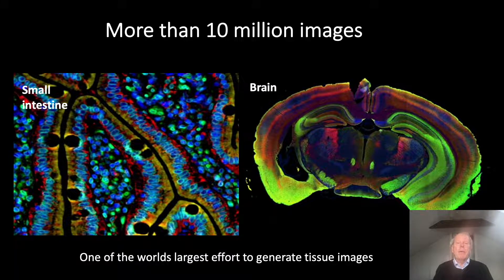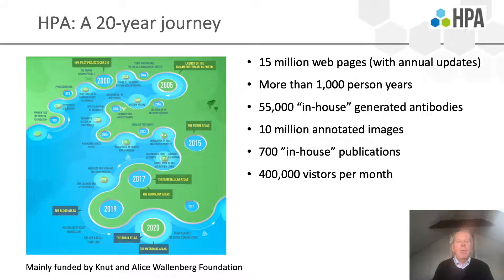We have created more than 10 million images, making this one of the largest efforts to generate tissue images, and all of these images are available in this open access database. It is now 20 years since we started this initiative. During these 20 years we have generated more than 15 million web pages, accessible through the database and updated annually.